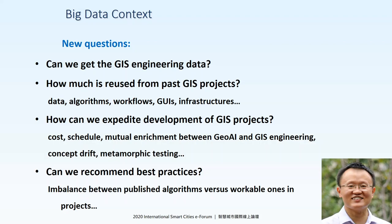How can we expedite development of GIS projects — the past cost, schedule? How we can use GeoAI to improve GIS engineering? And some new questions: the concept drift, the metamorphic testing. How can we recommend best practice? Sometimes we see lots of algorithms are published, but only some of them are workable in practice. A lot of questions are involved for the engineering data.